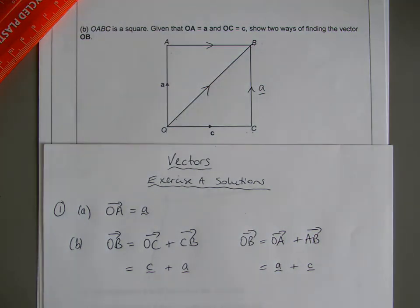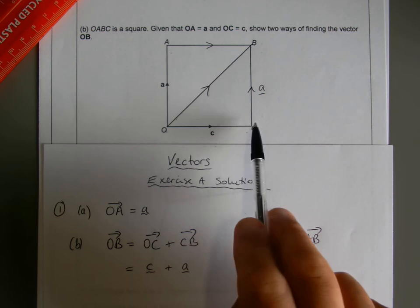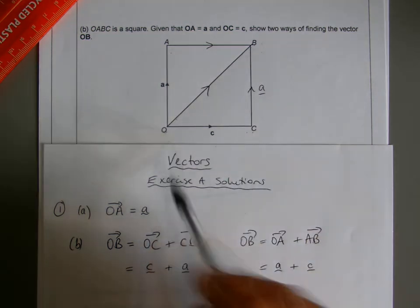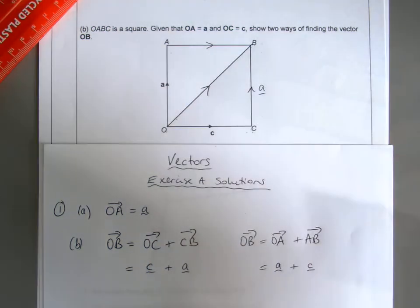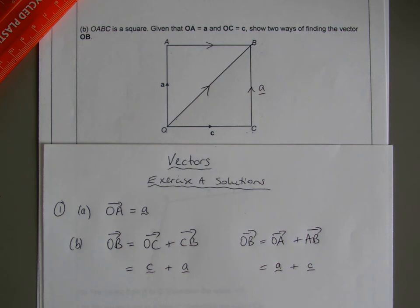And the same situation will occur if I go a different route. If I go from O to C and then C to B, I started at O but I still ended up at B. So the displacement is the same. That's why I can say these two are equal, because this takes into account that displacement idea.